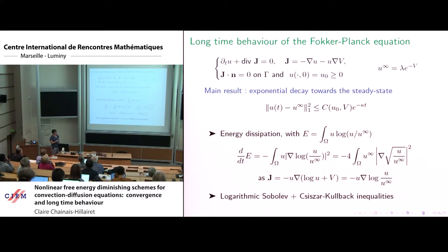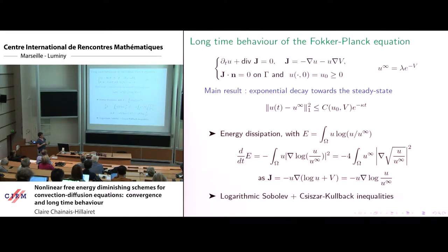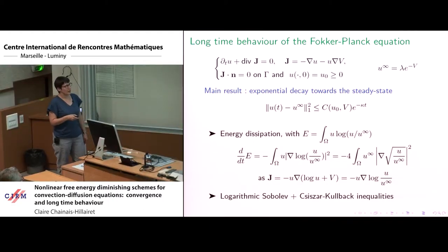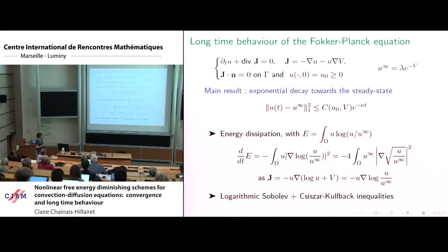This quantity can be rewritten under a form involving a kind of Fischer information. Using the properties of the derivative of the log and of the square root, you have this equality. So you have dissipation of the energy over time, and you know what the dissipation is.